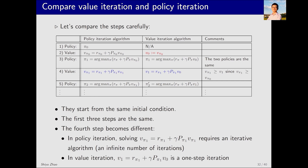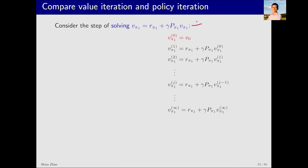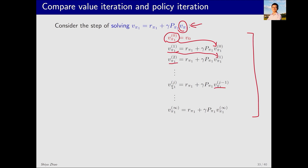Consider the step of policy iteration: it requires solving the Bellman equation to find v_pi_one. This requires a nested iterative algorithm. The notation v_pi_one^(0) indicates the initial estimate; subsequent superscripts one, two represent the first and second estimates. Starting from any initial value, we substitute it into the equation to get v_pi_one^(1), then v_pi_one^(2), and so forth until v_pi_one^(j). Eventually, calculating an infinite number of times leads to v_pi_one^(∞). This is a classic iterative algorithm for solving the Bellman equation, important for understanding how policy iteration uses a nested iterative process to evaluate the policy.